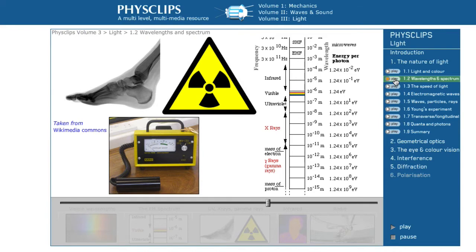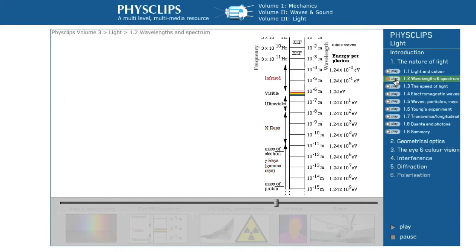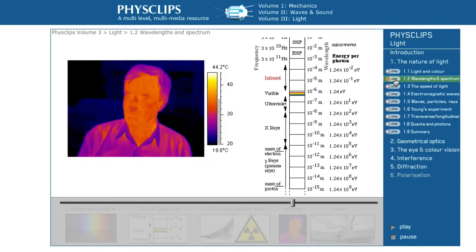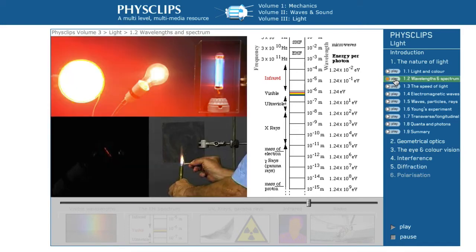Wavelengths longer than those of red light are infrared. We can feel these as warmth on our skin, and our warm skin emits infrared too. Very hot objects emit radiation in the visible as well as in the infrared.